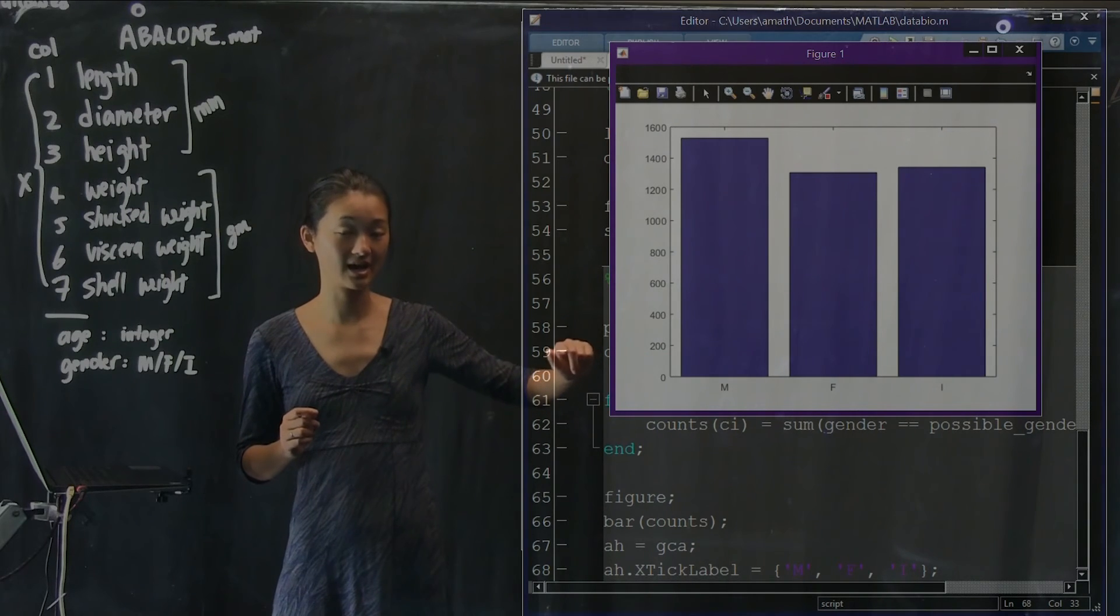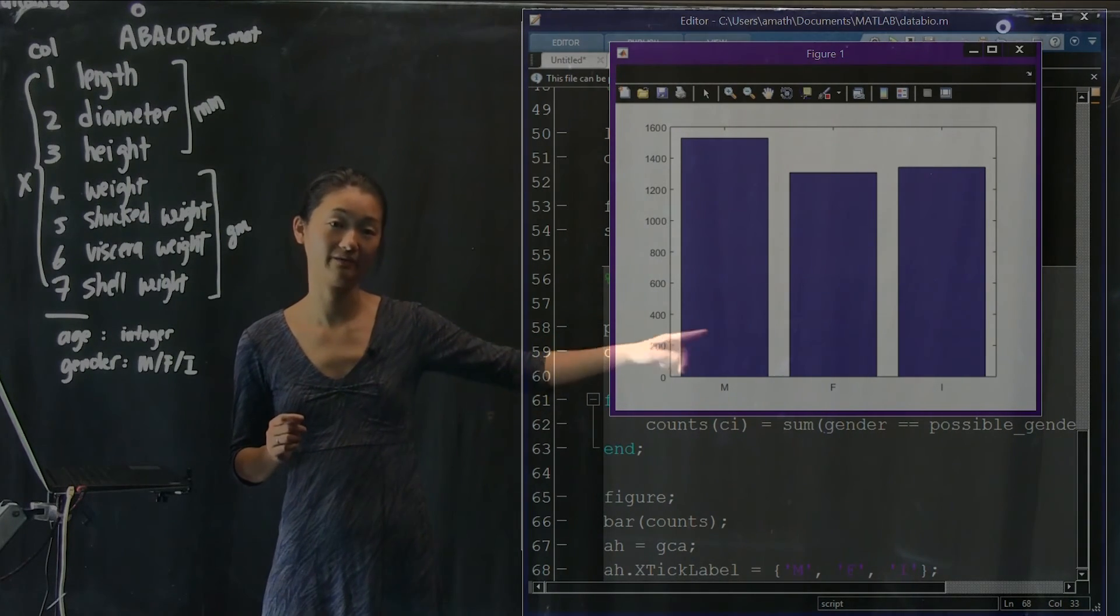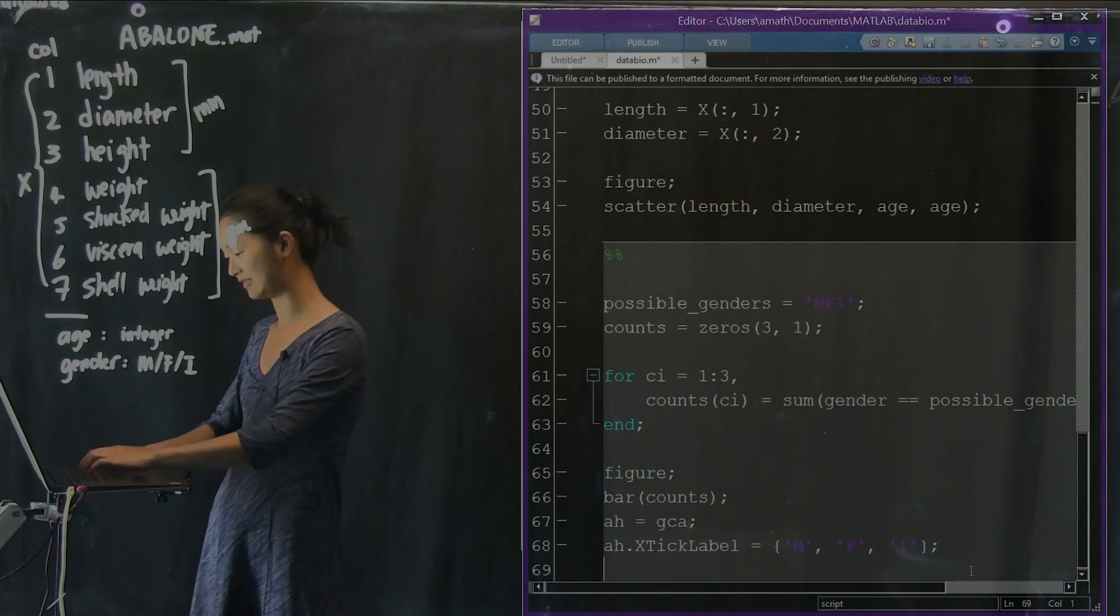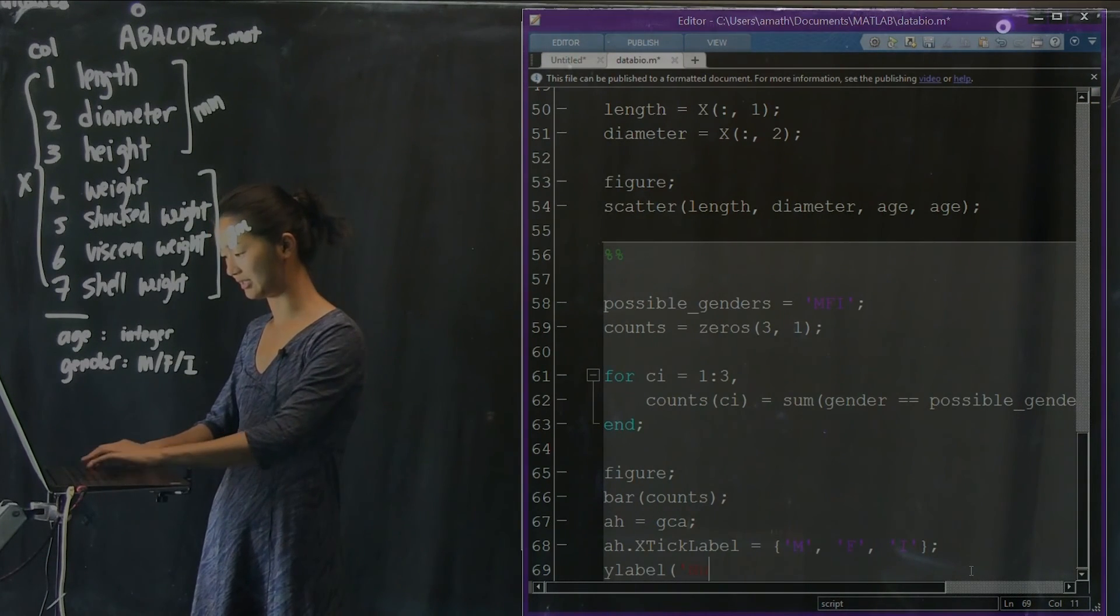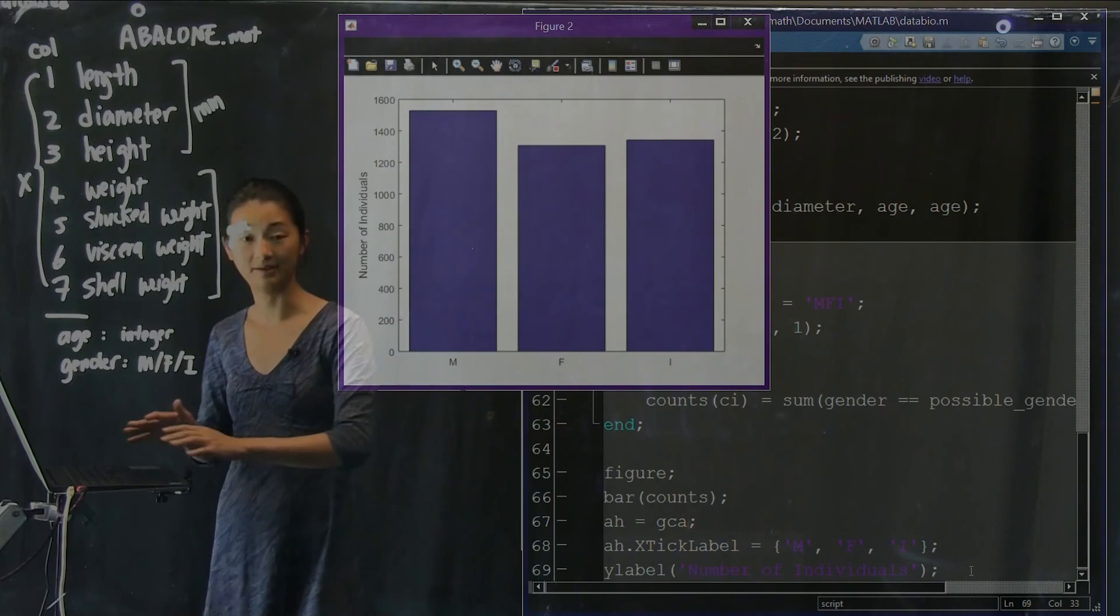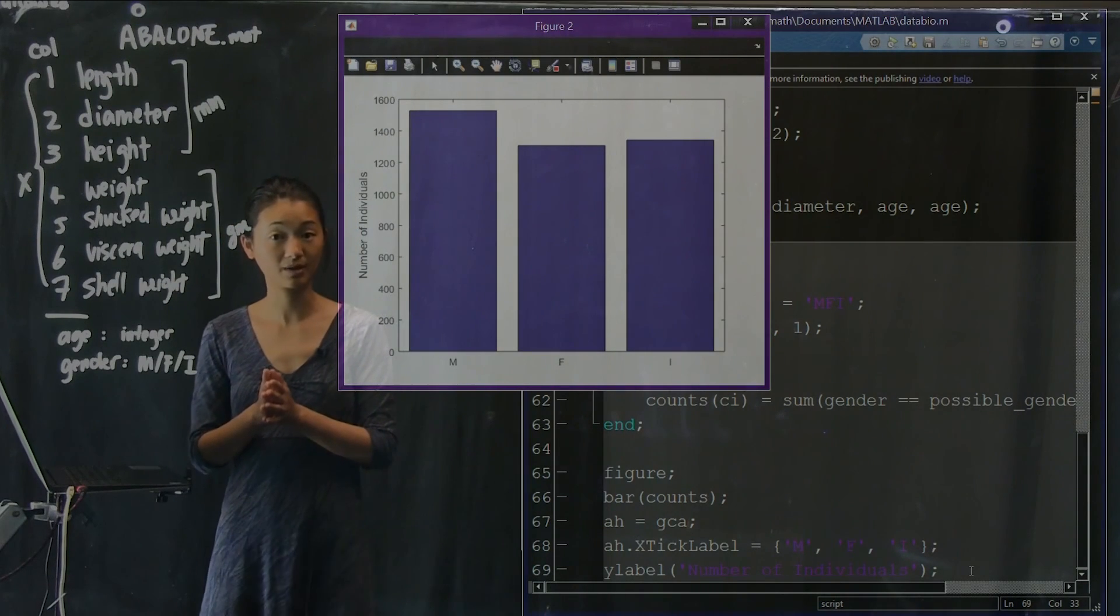And if we wanted to, we can also give this thing a y label, which is number of individuals. And that's it. That is how you do a bar graph.